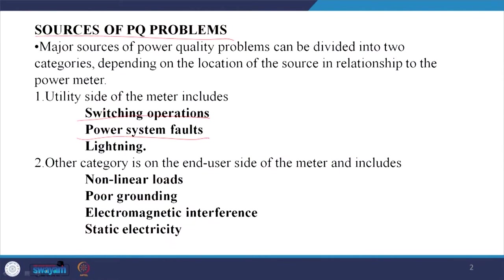On the utility side of the meter, these entities include the problem of reactive power and active power. Thereafter, there is a harmonic problem. On the end-user side, the category includes non-linear loads, poor grounding — which causes oscillation of the neutral — electromagnetic interference, and static electricity. We shall cover these entities in our subsequent discussion.